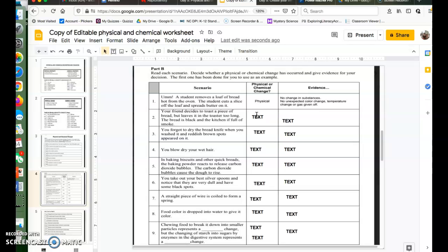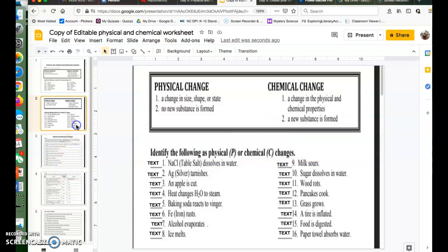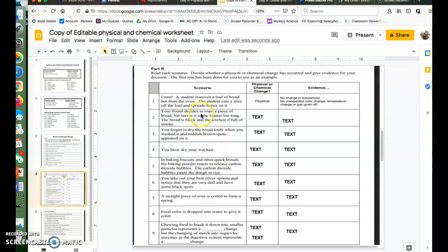Let's do number two together. Your friend decides to toast a piece of bread but leaves it in the toaster too long. The bread is black and the kitchen is full of smoke. Are we seeing a chemical or physical change? Hopefully you are able to identify this as a chemical change because we are burning, or reacting with oxygen and heat, the toast, or bread, which is now toast and smoke.